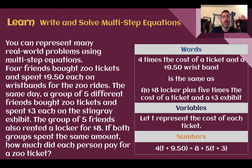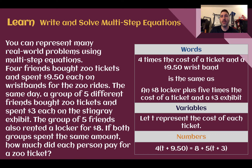Write and solve multi-step equations. You can represent many real-world problems using multi-step equations. For example, four friends bought zoo tickets and spent $9.50 each on wristbands for the zoo rides. The same day, a group of five different friends bought zoo tickets and spent $3 each on the Stingray exhibit. The group of five friends also rented a locker for $8. If both groups spent the same amount of money, how much did each person pay for a zoo ticket? We could figure out how much a ticket costs based on the fact that both groups spent the same amount, meaning they are equal. So if we can write an expression for each group, we can set them equal to each other and solve for the price of a ticket.